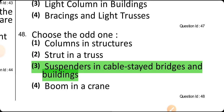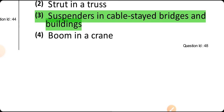Choose the odd one out from: column in a structure, strut in a structure, jib in a crane, and suspended cables. The third option — jib in a crane — is the odd one, as the remaining three are vertical members.